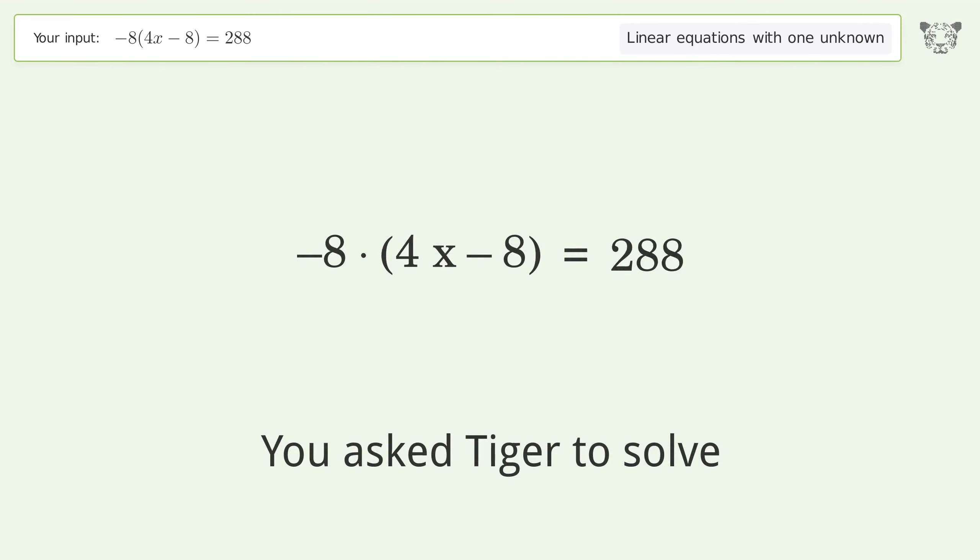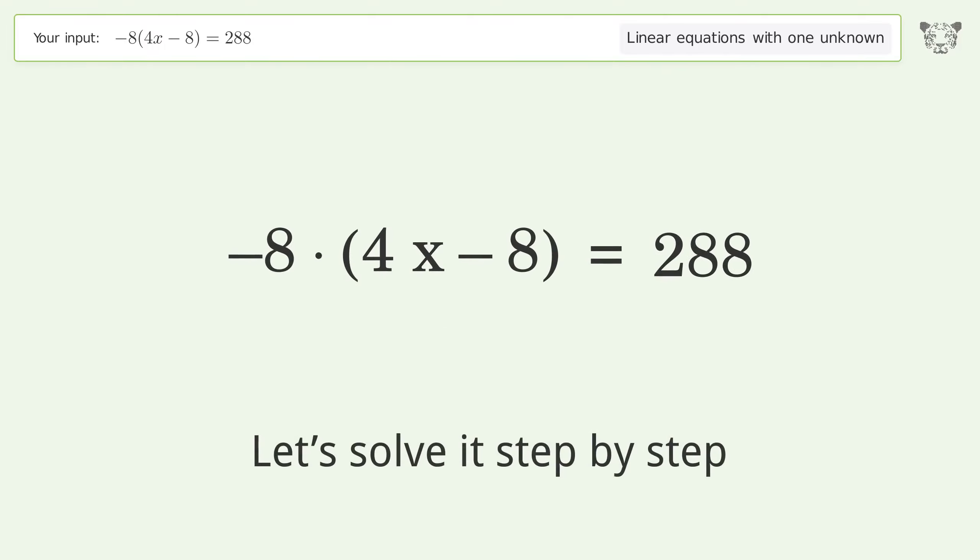You asked Tiger to solve this. This deals with linear equations with one unknown. The final result is x equals negative 7. Let's solve it step by step. Simplify the expression.